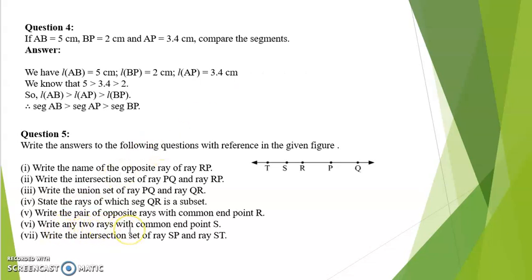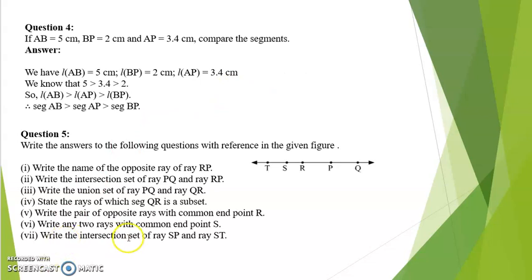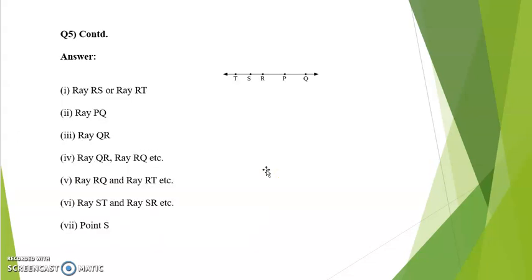Write any two rays with common end point S. We have ray ST and ray SR — again, there are other examples also. Write the intersection set of ray SP and ray ST. What is common is only point S, hence the answer is point S.